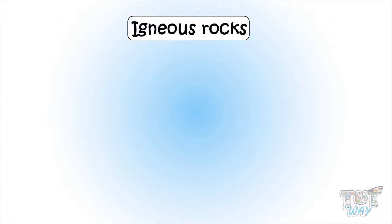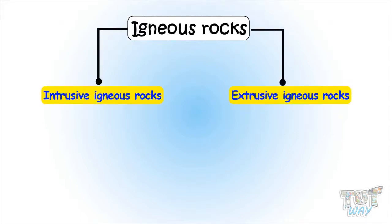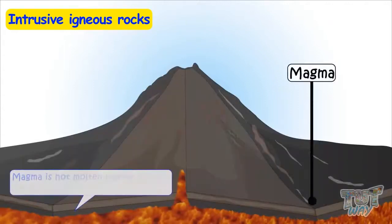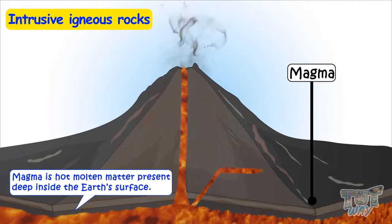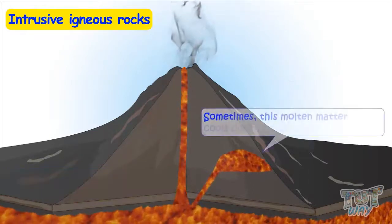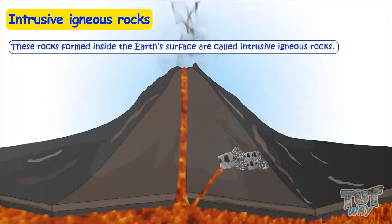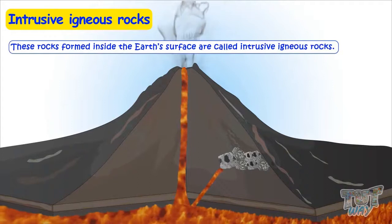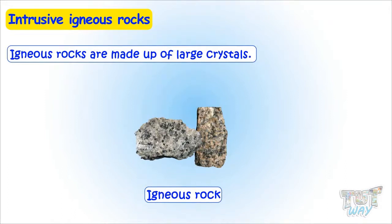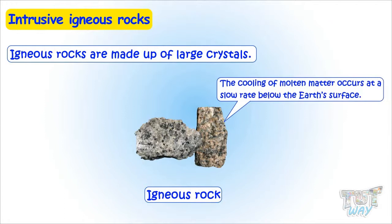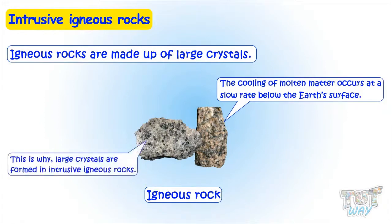Igneous rocks are of two types: intrusive igneous rocks and extrusive igneous rocks. Let's first learn what are intrusive igneous rocks. There is magma, which is hot molten matter present deep inside the earth's surface. Sometimes this molten matter cools down, hardens, and forms rocks. These rocks formed inside the earth's surface are called intrusive igneous rocks. They are made up of large crystals because the cooling of molten matter occurs at a slow rate below the earth's surface.